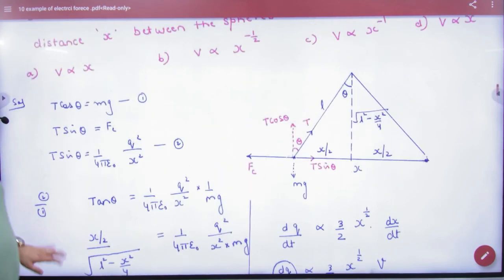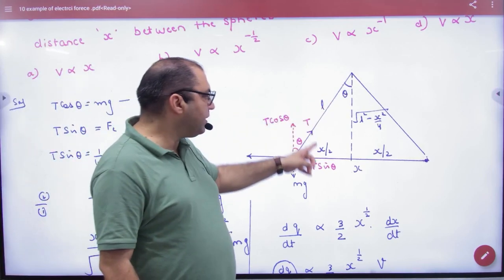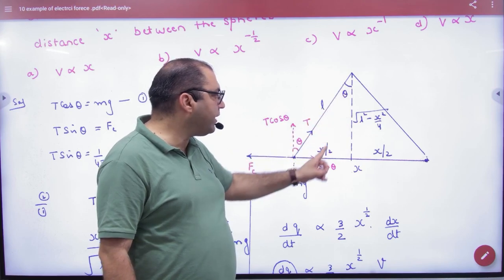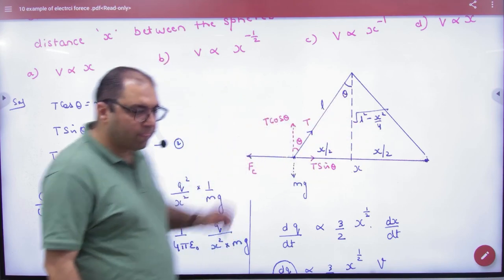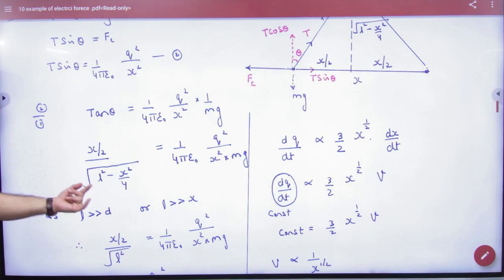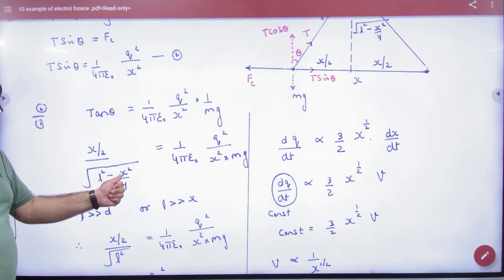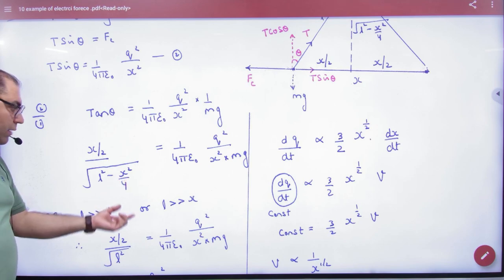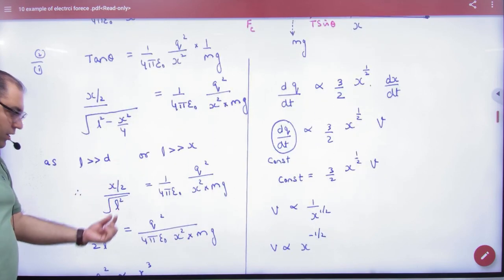Tan θ value from this right-angle triangle: L is known, X by 2 is known, Pythagoras gives the third side. Question given is L is very big with respect to X, so X² by 4 is negligible. What will become under root? L². So this is L.